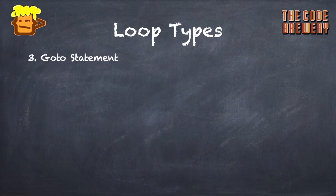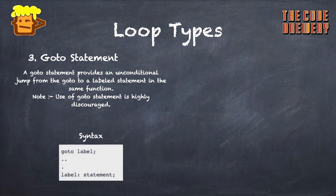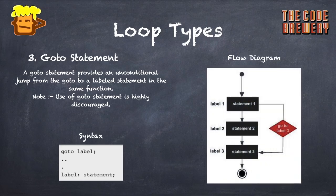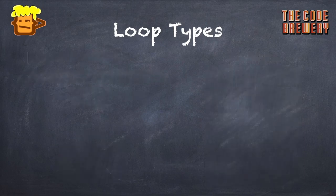The third type is the goto statement, which is mostly advised to avoid. A goto statement provides an unconditional jump from the goto to a labeled statement in the same function. Its use is highly discouraged. The syntax is: goto label; and later the label is written with a colon. From the flow diagram, if a goto statement is met and it has label three, execution jumps directly to the label-three statement and code continues from there.